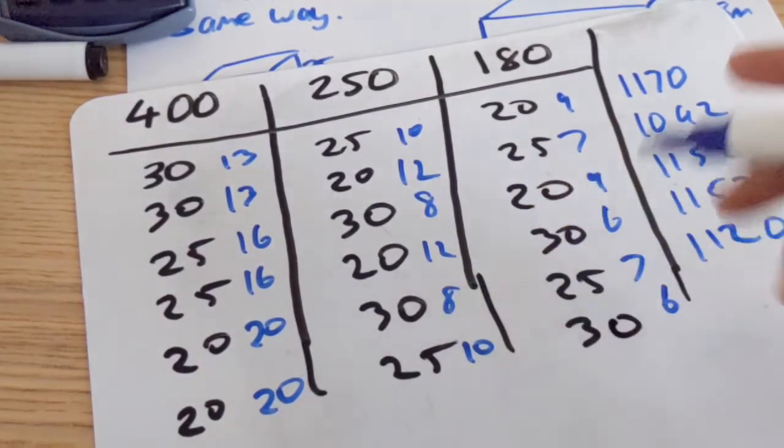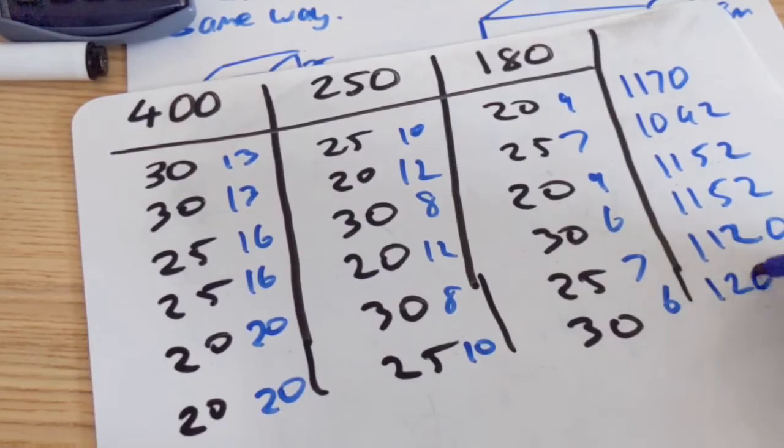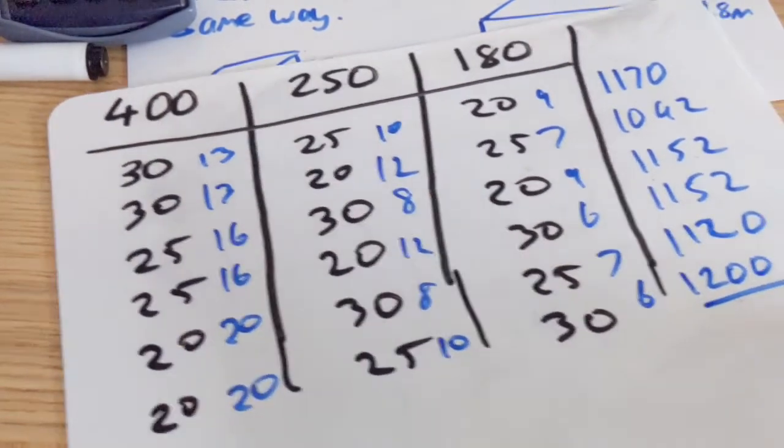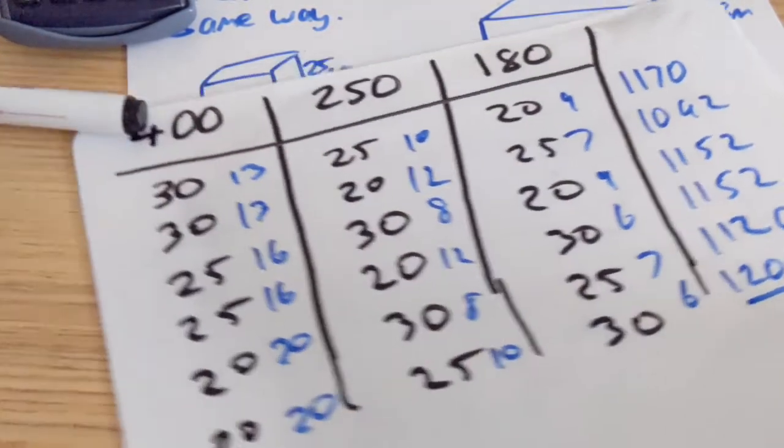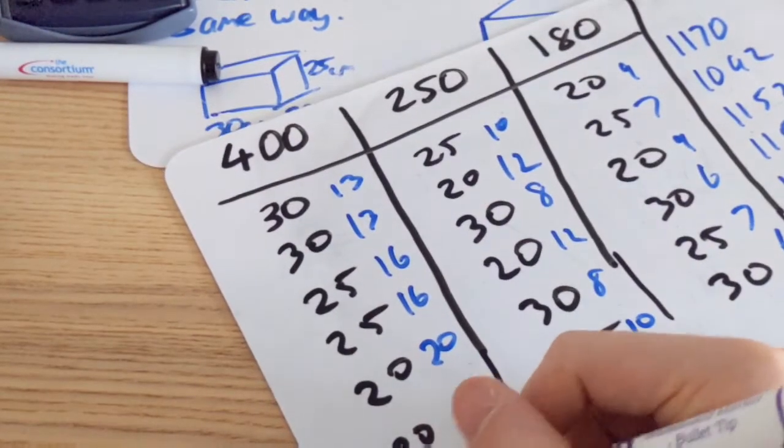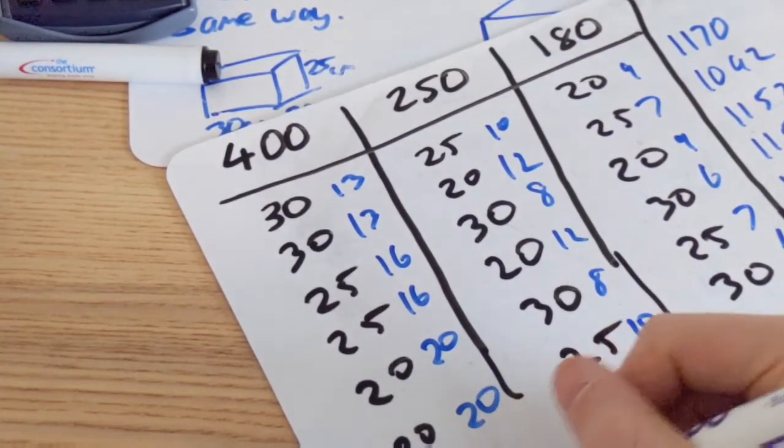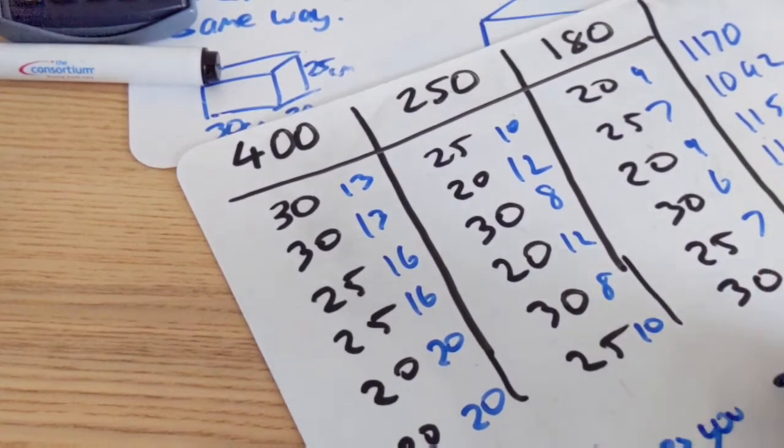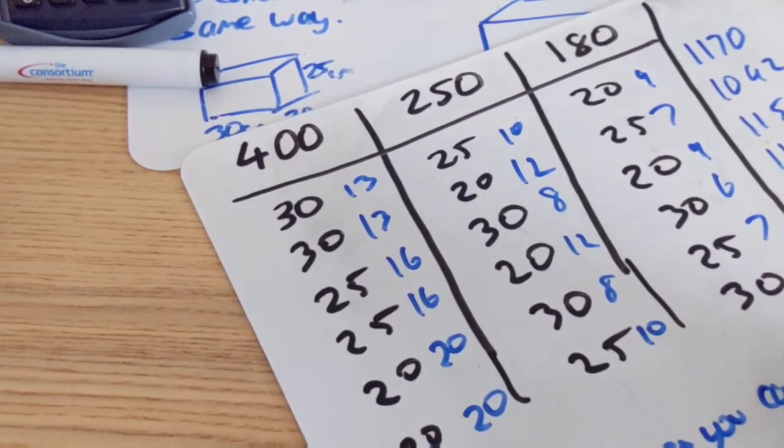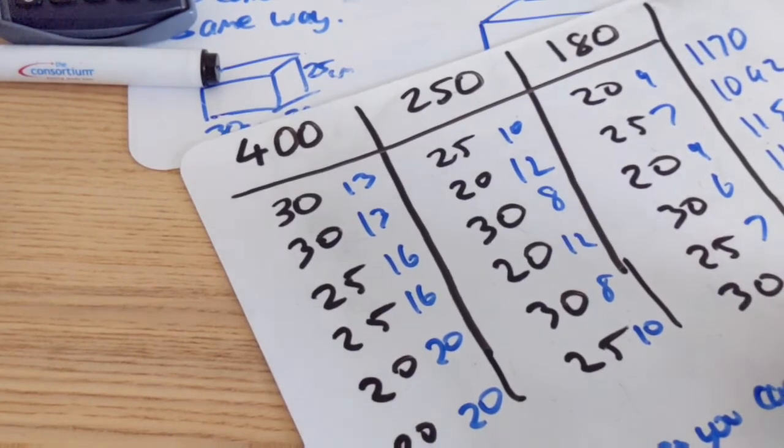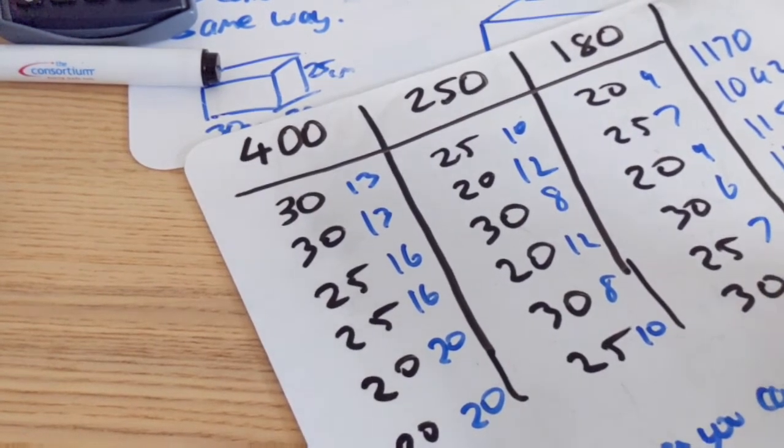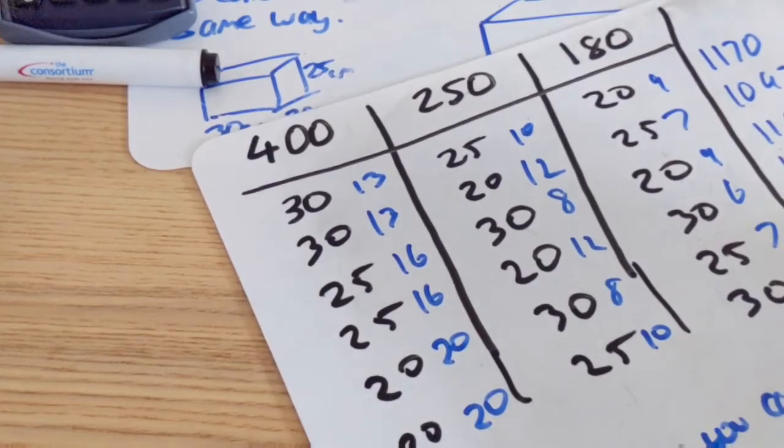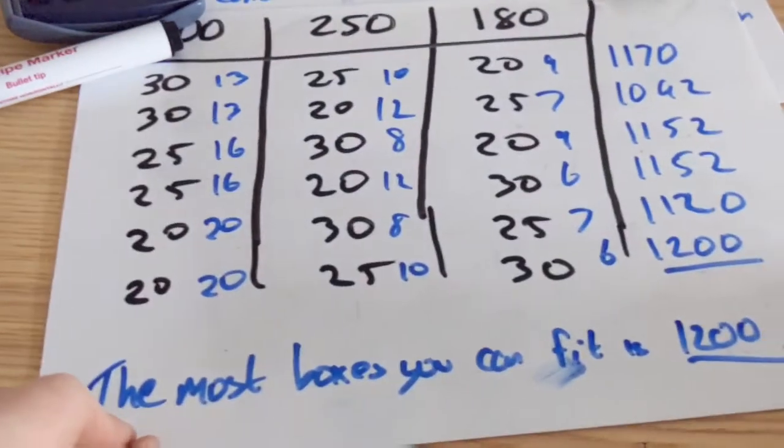And then 20 times 10 times 6 is 1200. So there's the maximum number you can fit. It's 1200. You can just write that at the bottom. The most boxes you can fit is 1200. And that's how you do it.